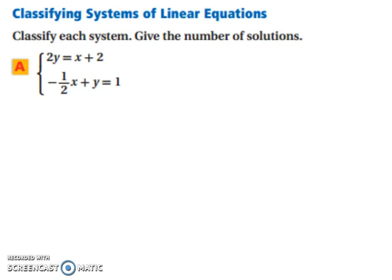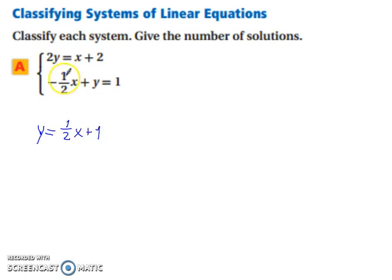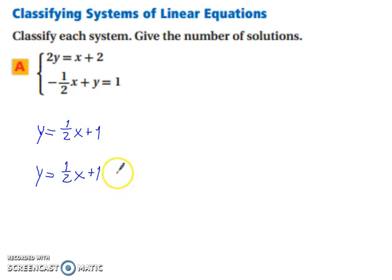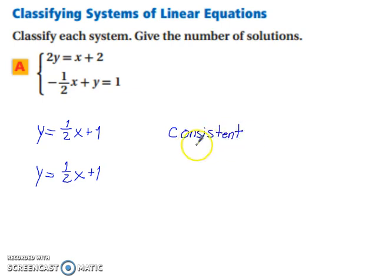Let's classify systems of linear equations and give the number of solutions. Solving for y in both equations to compare slopes: the first equation gives y equals one-half x plus 1, dividing both sides by 2. The second equation gives y equals one-half x plus 1 after moving the one-half x to the other side. Since both equations are identical, there are infinitely many solutions. Therefore, it is consistent and dependent.